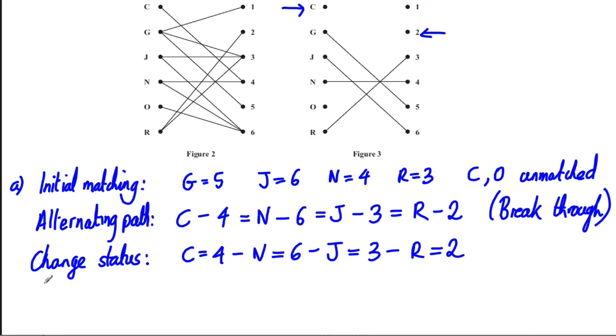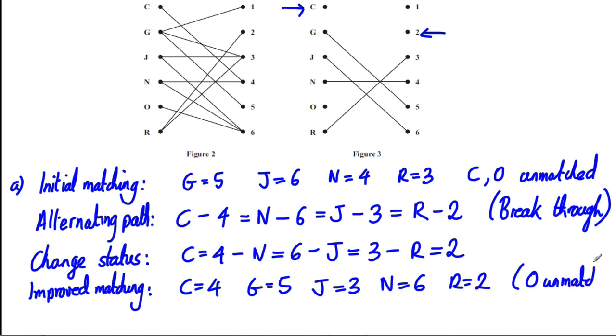And that's your change status. But let's finish these questions by stating now our improved matching. So don't forget to do this at the end. So our improved matching. Well, C is now with 4. That's an improvement. G, well, G didn't change. G is still with 5. And J is now with 3 up here. N is now with 6 over here. And O is currently unmatched still. And R is now with 2. And O is now the only unmatched one.